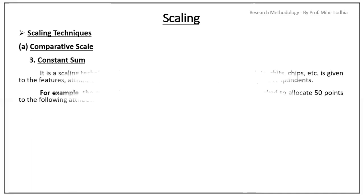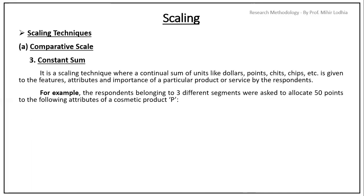Third one, constant sum. It is a scaling technique where a continual sum of units like dollars, points, chips, etc. is given to the features, attributes and importance of a particular product or service by the respondents. For example, respondents belonging to three different segments were asked to allocate 50 points to the following attributes of a cosmetic product P.